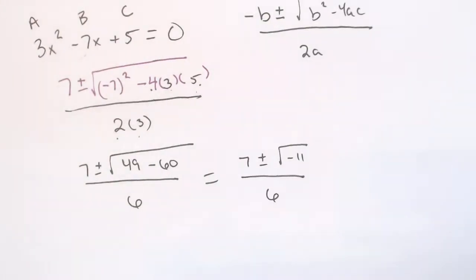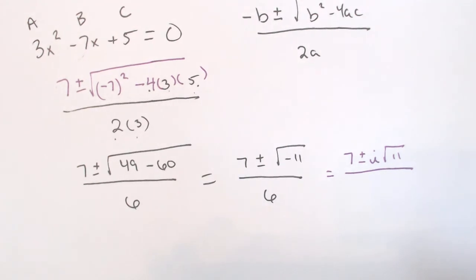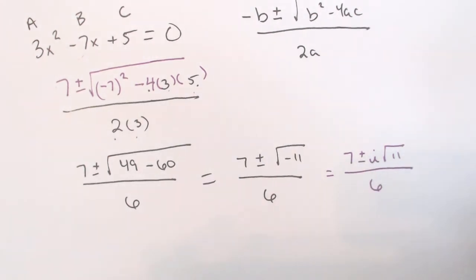And the square root of negative 11 does not simplify, but you do have the option, and not an option at all really, of taking out the i, because it is the square root of a negative number, and putting it over 6.